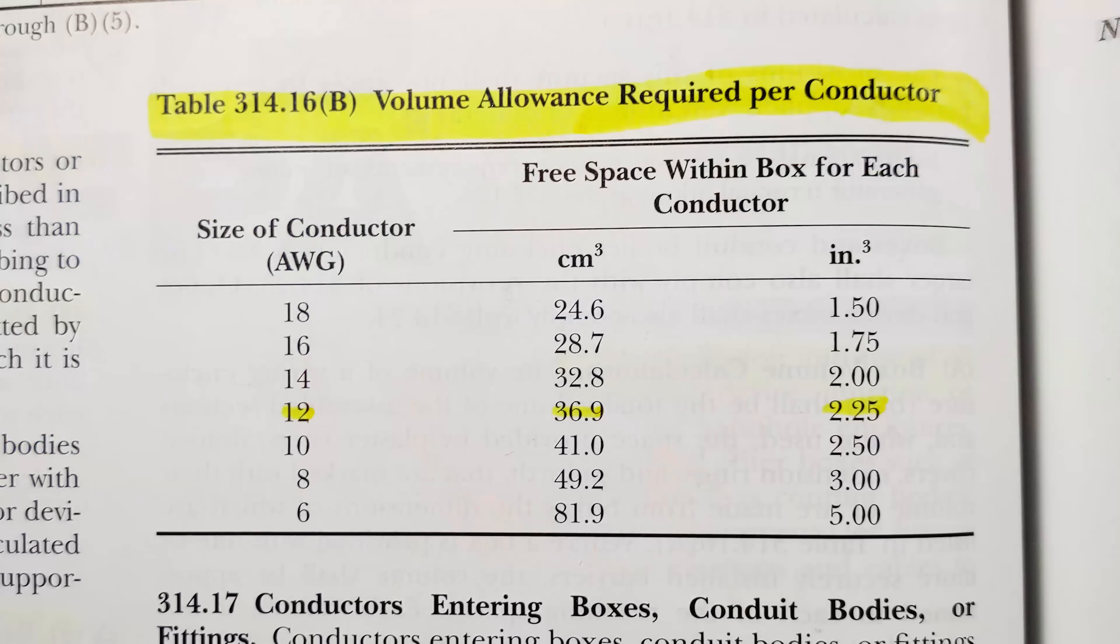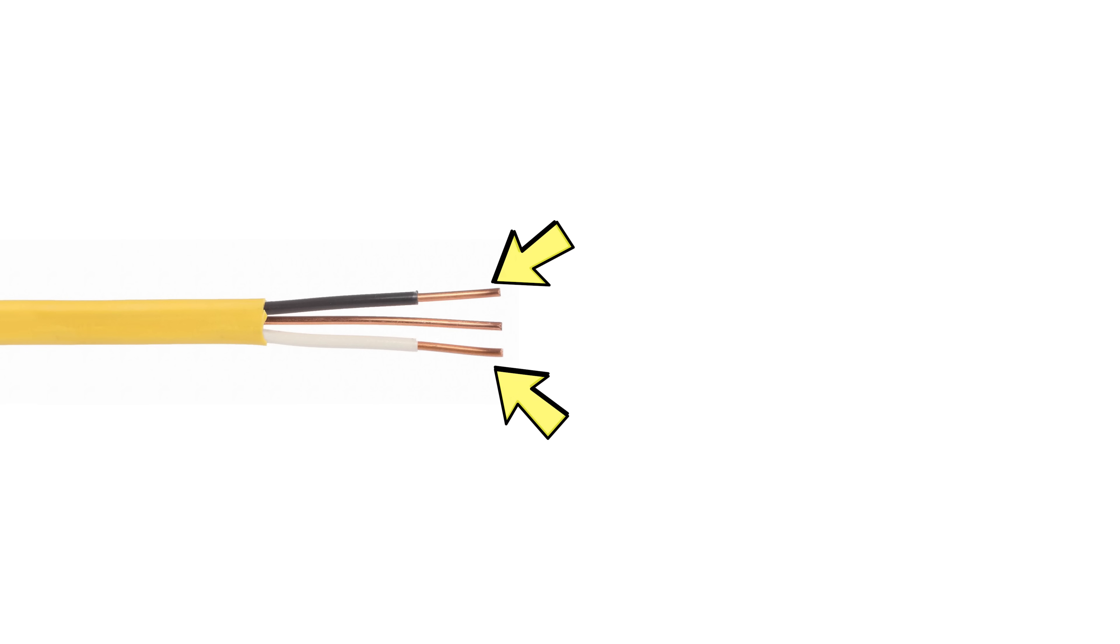Let's break into this a little bit and do the calculations. There's Table 314.16b which corresponds to everything I just talked about. This says it is the volume allowance required per conductor. If we're using 12-2 Romex, those number 12 conductors are worth a certain volume. Look at the inches cubed column on the right. Number 12 is 2.25 cubic inches. This box is a four cubic inch box, so you can already kind of see where we're going with this.